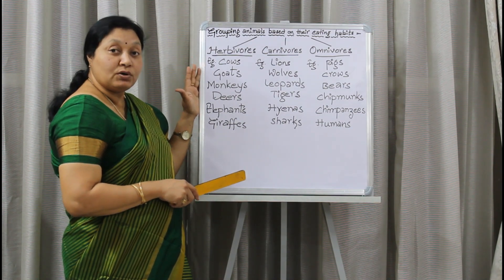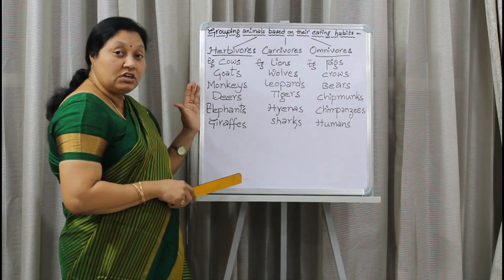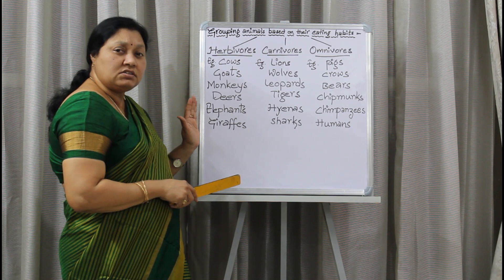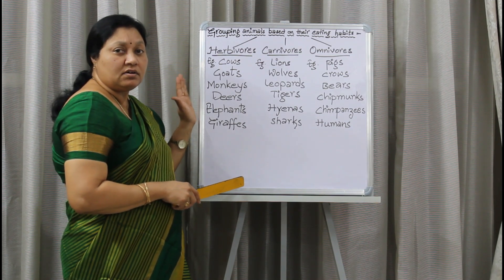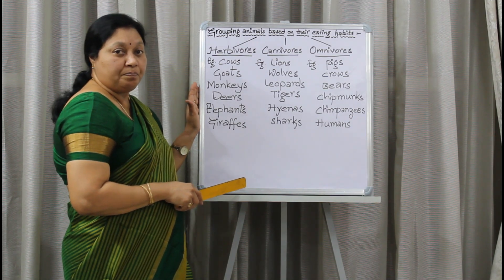Cows, goats, monkeys, deer, elephants, and giraffes — all these are examples of herbivores.